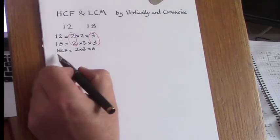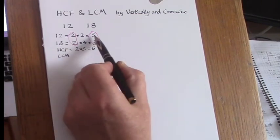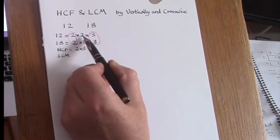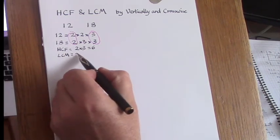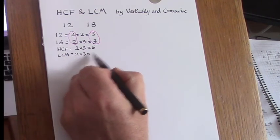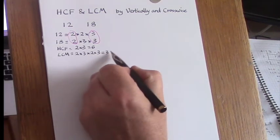For the LCM, we take one of these 2's, we take one of these 3's, and then the remaining factors and multiply them all together. So that would be 2 times 3 times 2 times 3 equals 36.